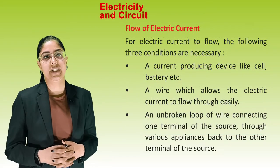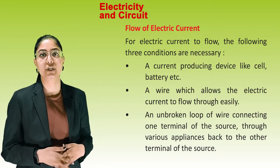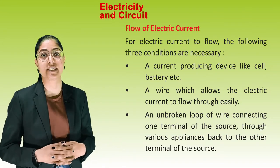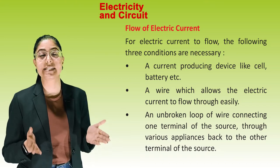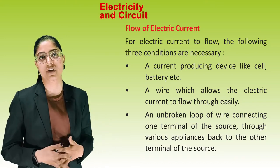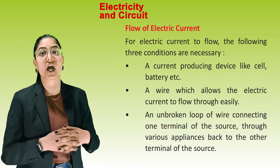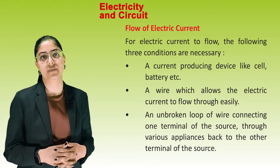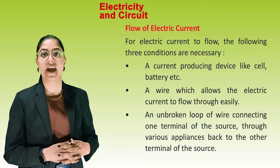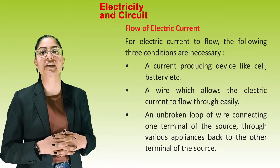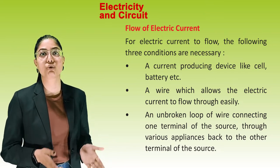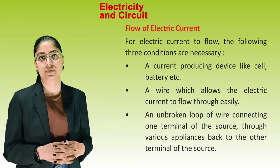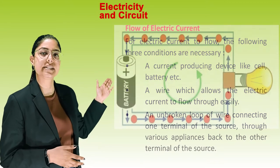Flow of electric current: for electric current to flow, three conditions are necessary. A current-producing device like a cell or battery. A wire that allows electric current to flow through easily. An unbroken loop of wire connecting one terminal of the source through various appliances back to the other terminal of the source.